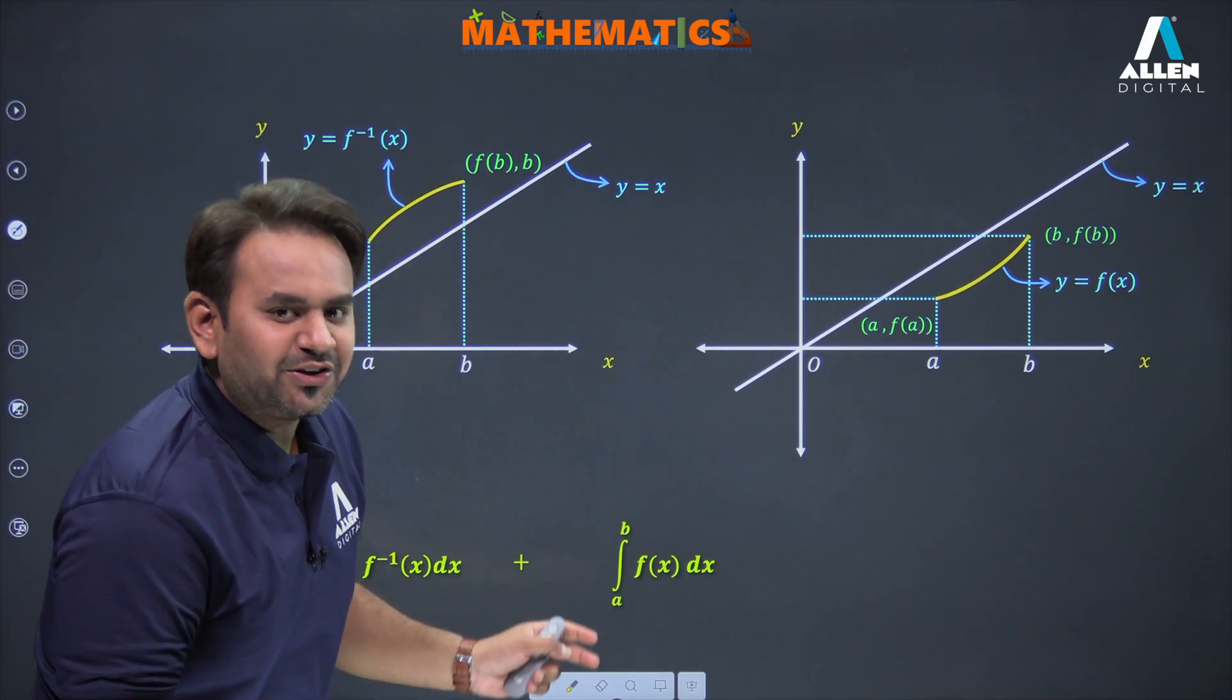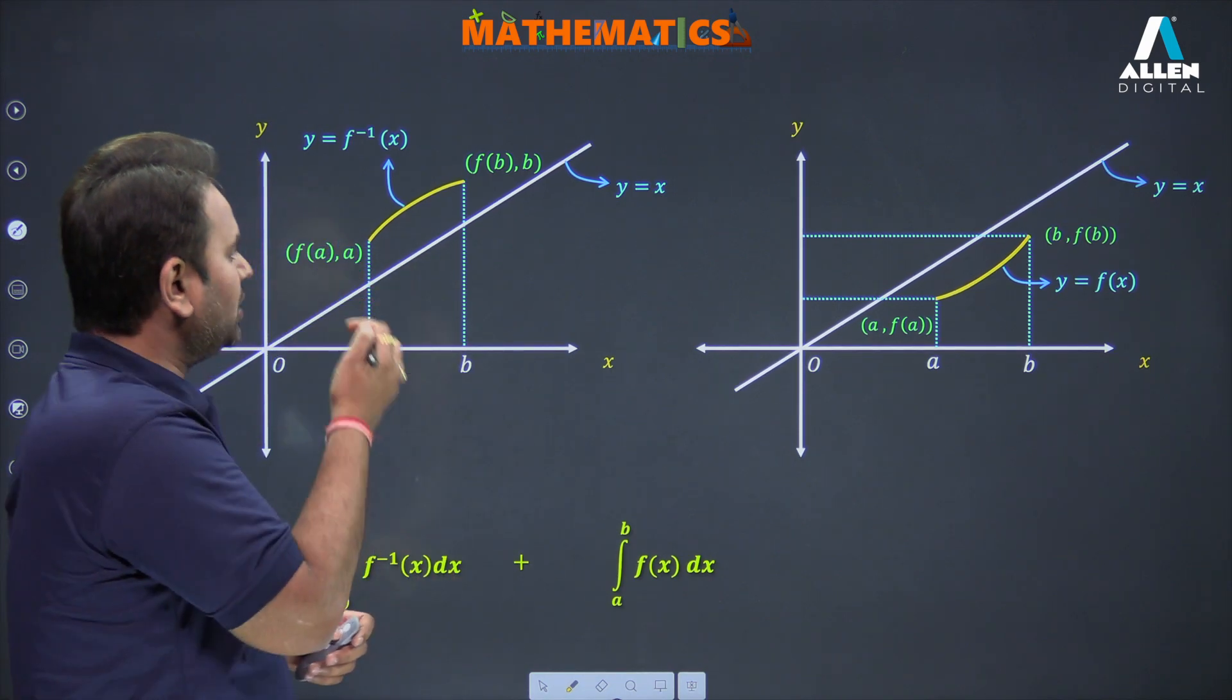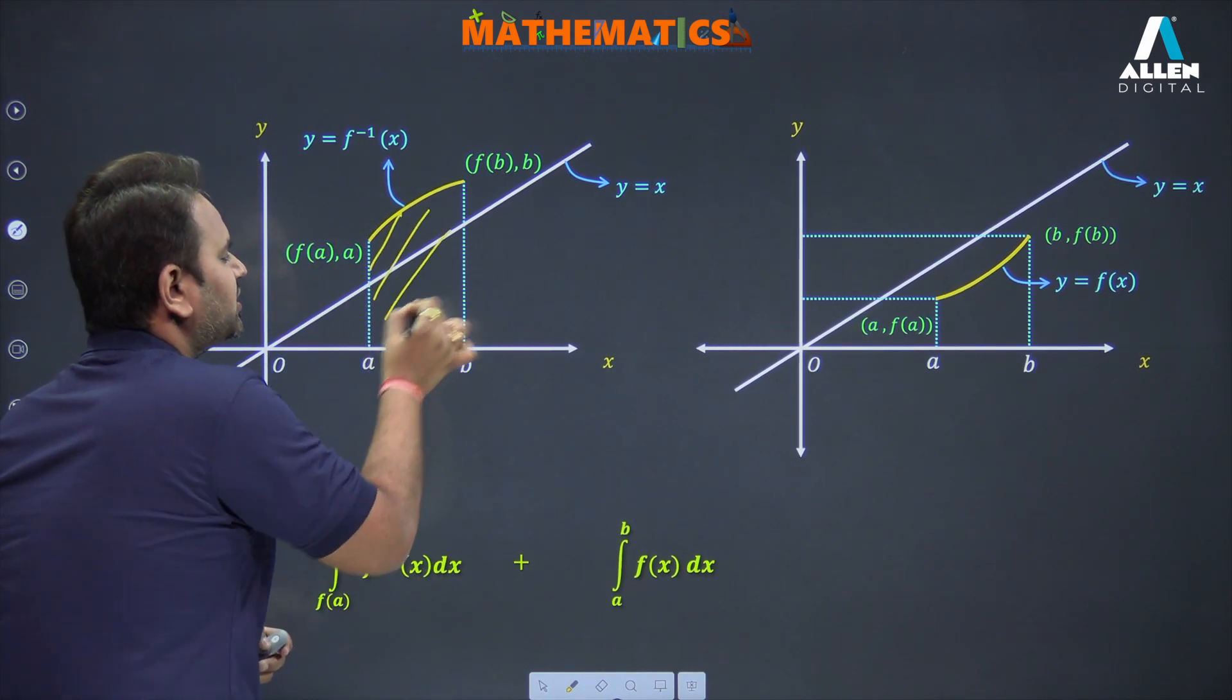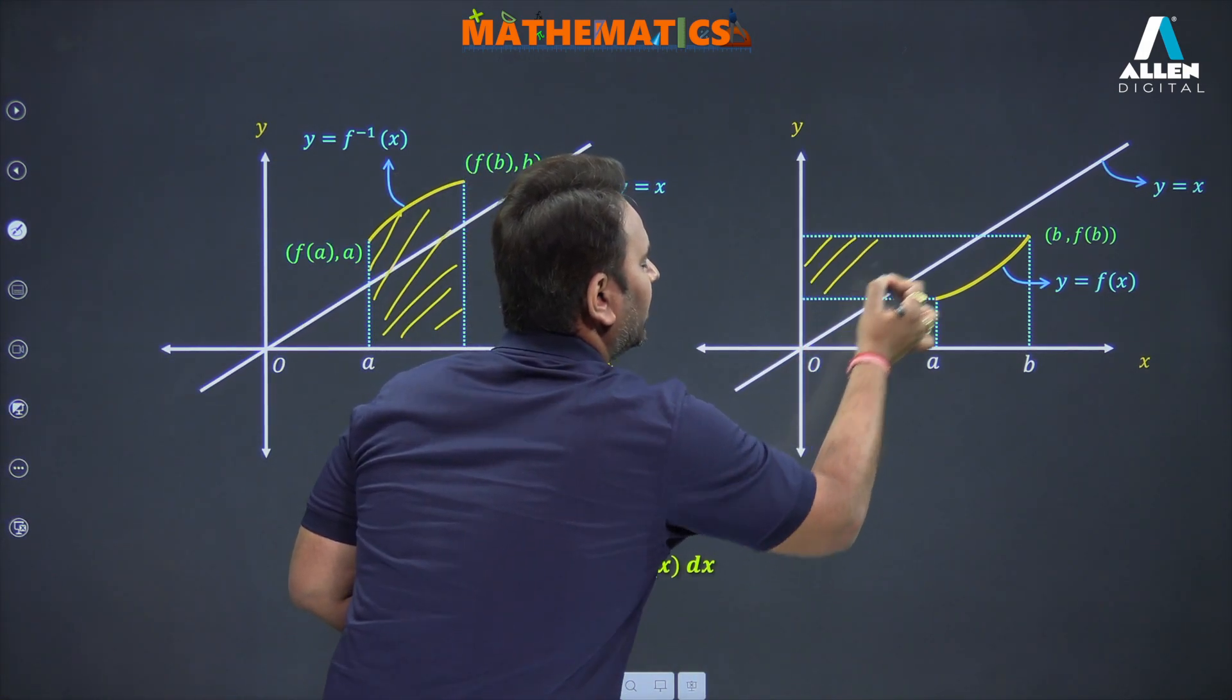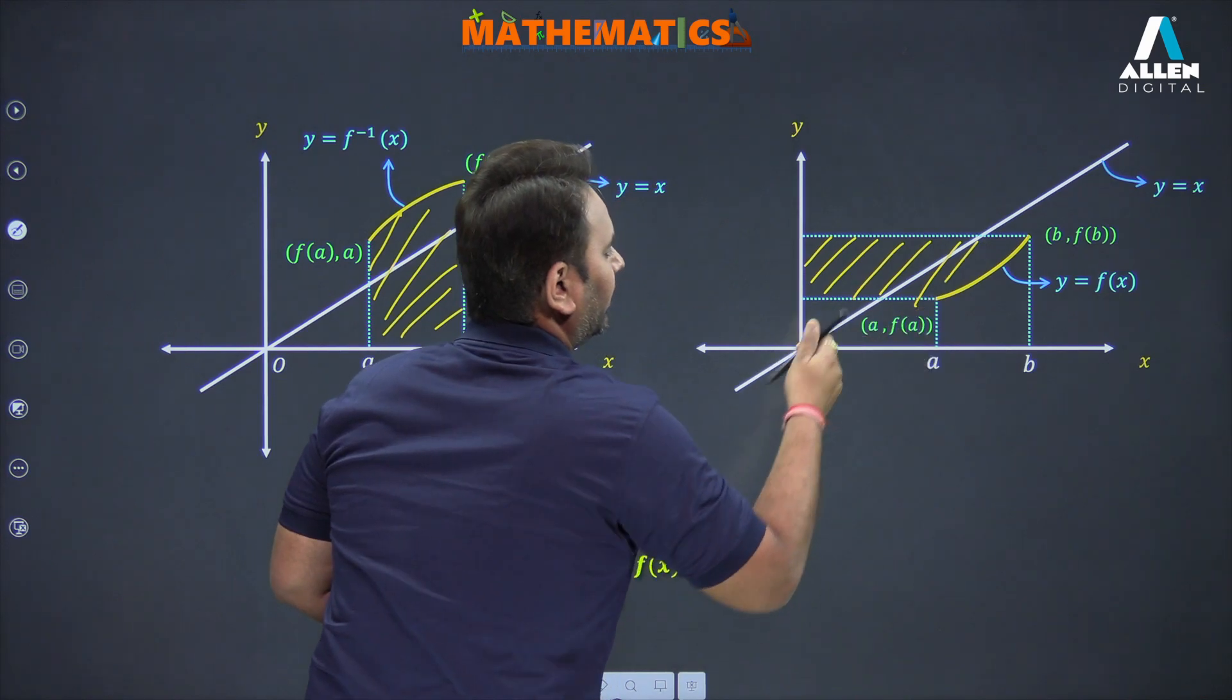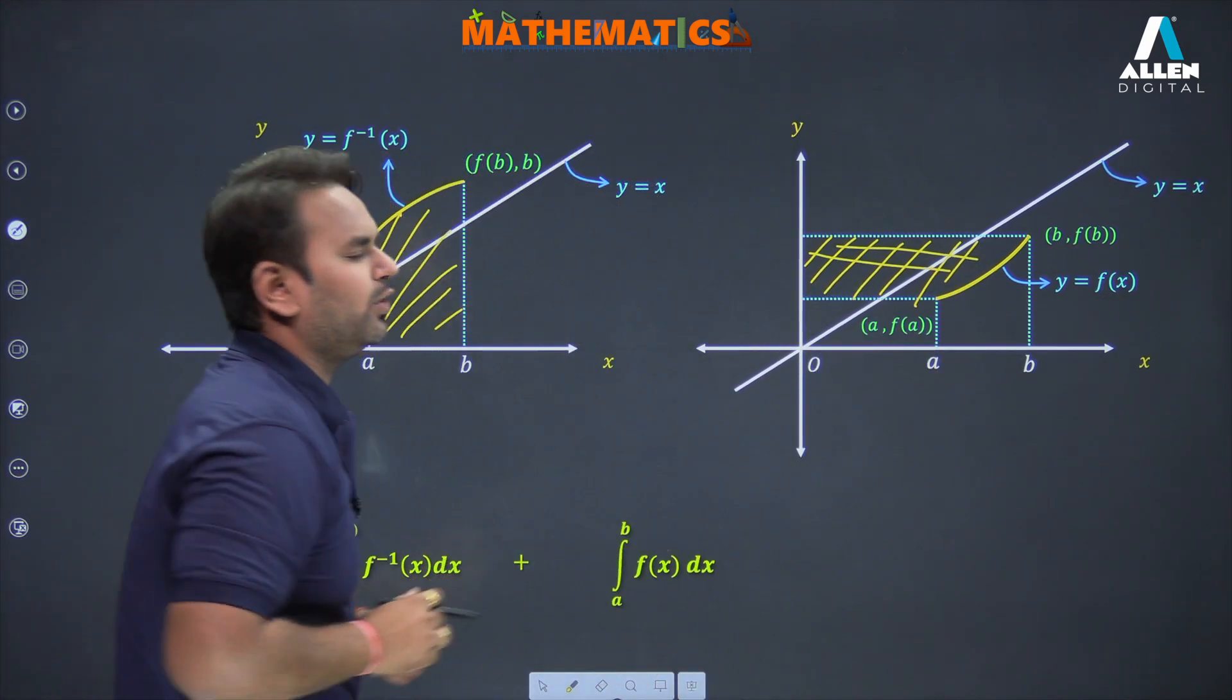And here it will be the area formed by integral from a to b of f(x). Now what happened? I took this graph from here and pasted it there. They are mirror images of each other. After pasting, you can see that the area you're getting from this portion, this area, and the area you're getting here, this portion, both areas will be the same. Everyone can see this? Both areas will be the same.